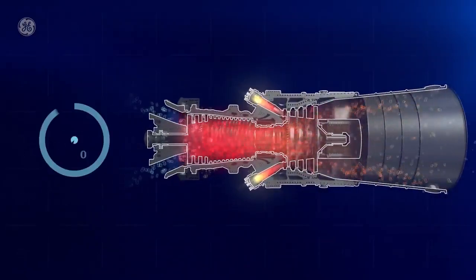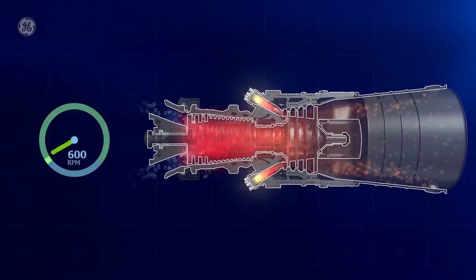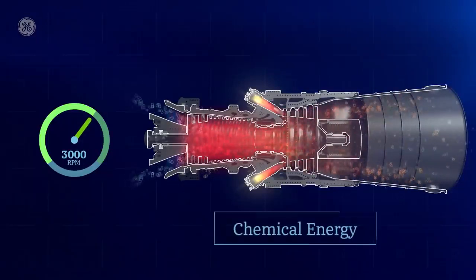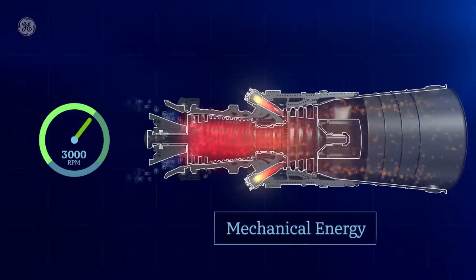The hot gas created from the ignited mixture moves through the turbine blades, forcing them to spin at more than 3,000 rpm. Chemical energy has now been converted into mechanical energy.